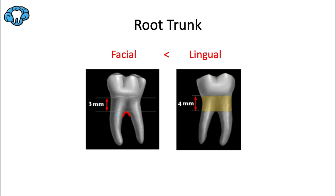For this tooth, the facial root trunk — the area between the cervical line and the furcation — is shorter than the lingual root trunk. In other words, the facial CEJ is closer to the bifurcation than the lingual CEJ is.